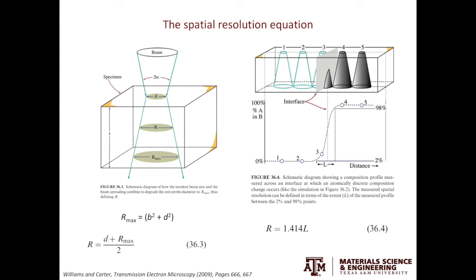Due to the cone shape of the interaction volume, it will introduce artifacts when we do chemical analysis across an interface. Assume we have an interface that lies parallel to the electron beam direction, then we have the electron beam scanning from left to right. In theory, there should be a sharp transition of the chemical composition across the interface. However, due to the beam spreading, the measured compositional profile is sigmoidal in shape.